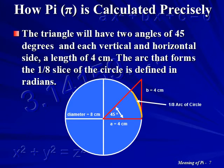The arc that forms the one-eighth slice of the circle shown in the diagram is defined in radians. Students who have studied trigonometry will be familiar with radians as well as other functions such as tangents and arctangents.